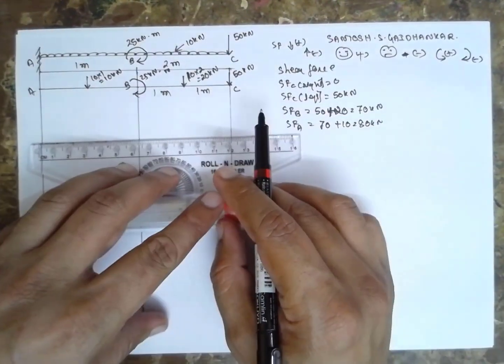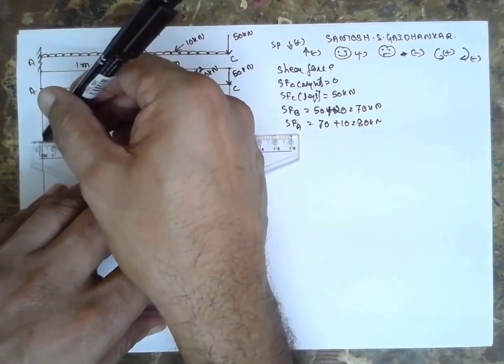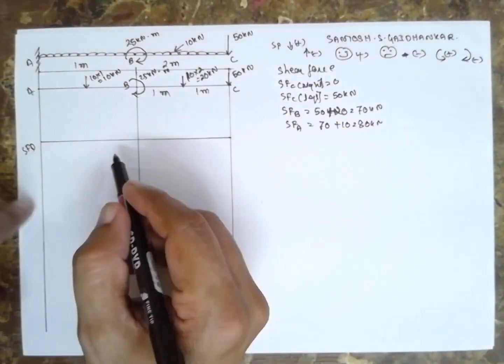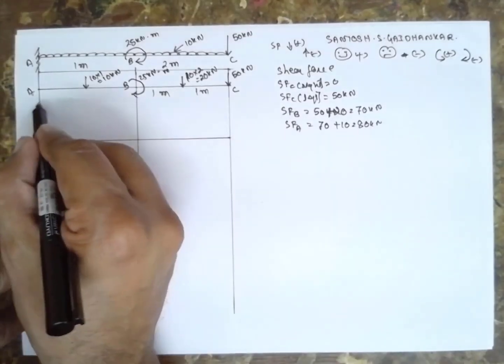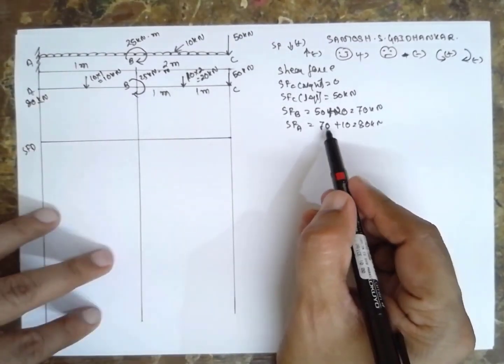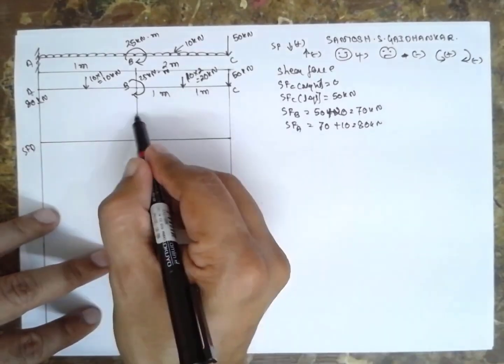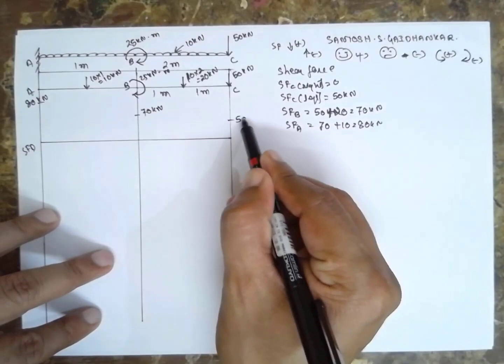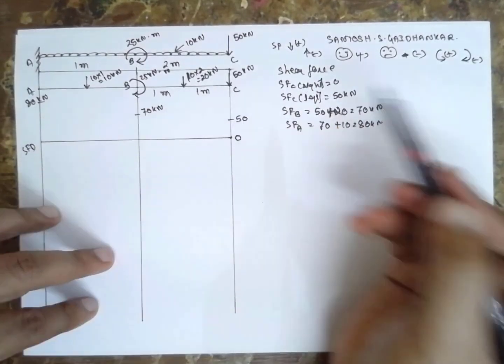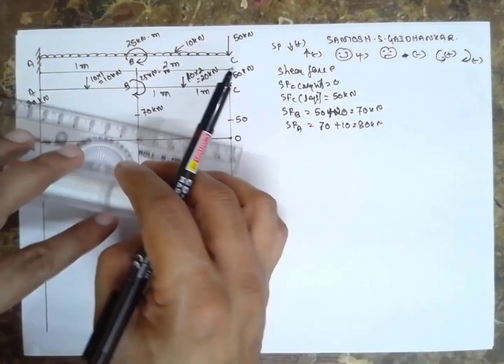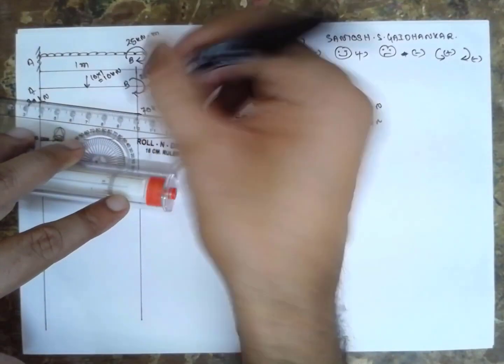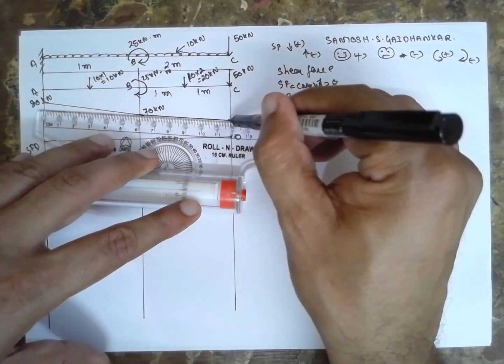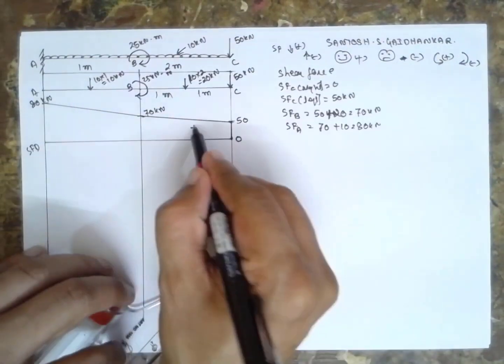Now I will draw the shear force diagram. Above is positive and below is negative. The first value is 80 kN at A. At B, 70 kN. At C, 50 kN. And C right is 0. Because of UDL, inclined lines come in the picture. Positive values throughout.